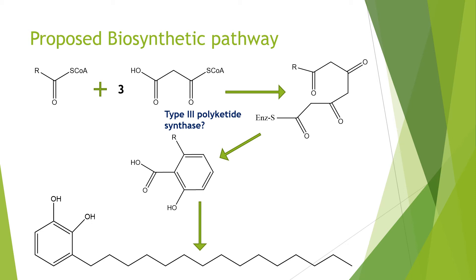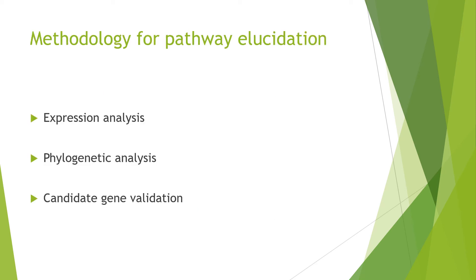The type 3 polyketide synthase has evolved from duplication of a ketoacyl synthase. There are also additional enzymes such as oxidative decarboxylase, as discussed, and possibly desaturases involved in modulating the saturation content of that long hydrophobic tail of urushiol.